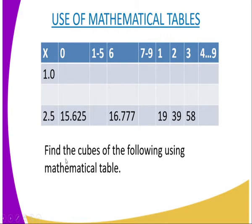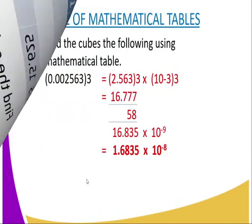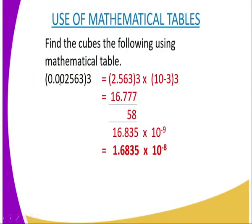And therefore, as far as the first question is concerned, you are told find the cube of the following using mathematical table. The number is 0.002563. So what are you supposed to do? You are supposed to convert this number into standard form.